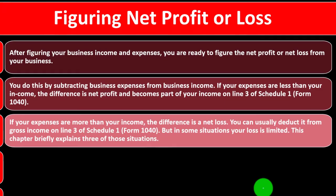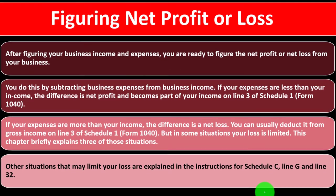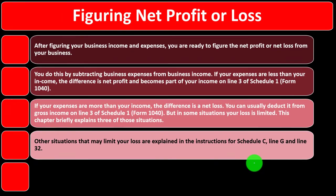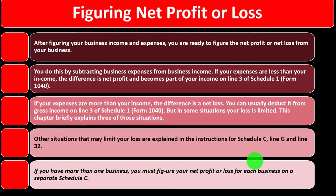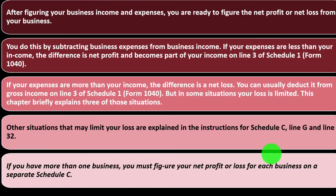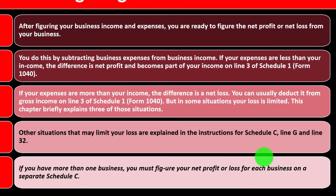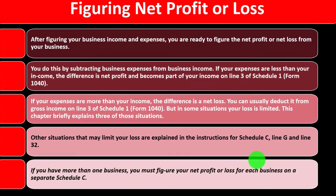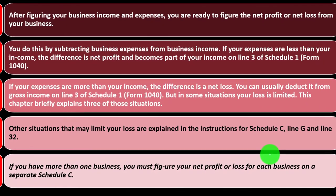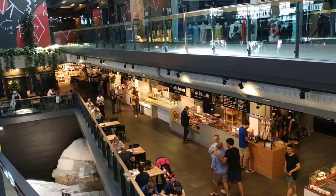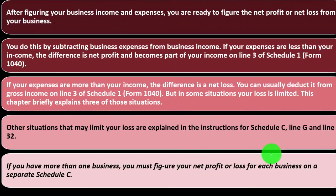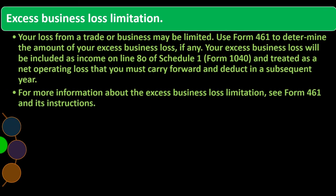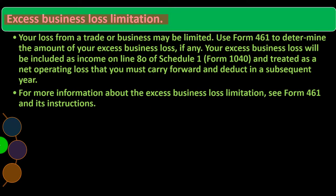In some situations your loss is limited. The IRS is going to want to limit those losses. This chapter briefly explains three of those situations; other situations that may limit your loss are explained in the instructions for Schedule C Lines G and 32. If you have more than one business, you must figure your net profit or loss for each business on a separate Schedule C.